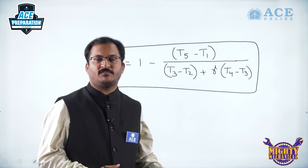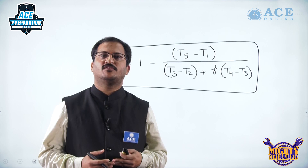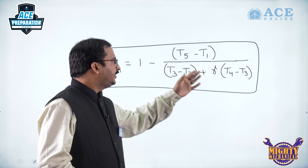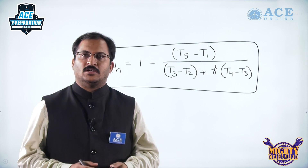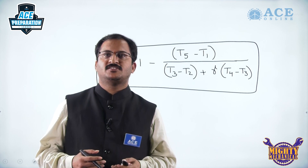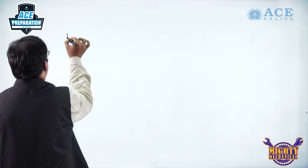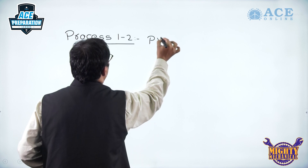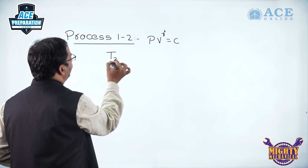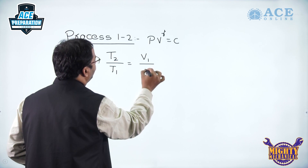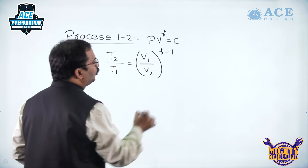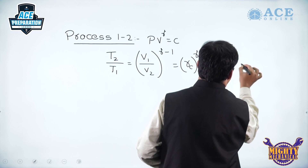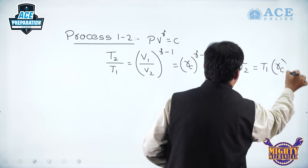Now let us express thermal efficiency in terms of the ratios. We need T2, T3, T4, and T5 all in terms of T1. For process 1 to 2 (isentropic compression), PV^γ = constant, so T2/T1 = (V1/V2)^(γ−1) = R_C^(γ−1), giving T2 = T1 · R_C^(γ−1).